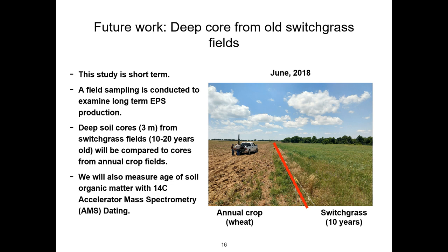Our further work is to confirm these findings in the field. We are currently doing deep coring, taking samples from up to three meters along the deep roots of the switchgrass, and comparing them with annual crop fields for EPS content. In addition, we will measure the age of the soil organic matter using ¹⁴C accelerated mass spectrometry dating.